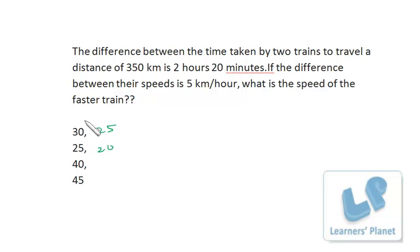If the faster train is 30, then 350 by 30 is something around 11 and 2/3 hours. And if this is the speed of the faster train, then the slower train must be 25 km per hour. So 350 divided by 25, this is 14.